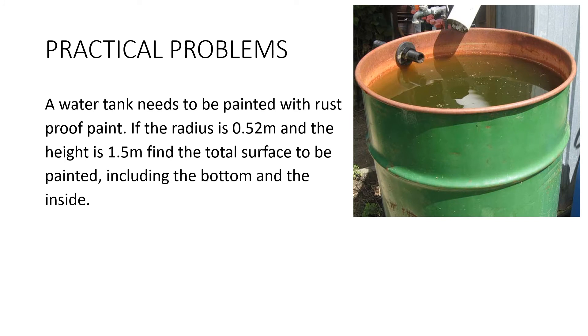Here's a practical problem. A water tank needs to be painted with rust proof paint. If the radius is 0.52 of a metre and the height is 1.5 metres, find the total surface to be painted, including the bottom and the inside. Now this is an interesting problem. We're going to have to manipulate the formula, but we're going to be painting inside the cylinder as well as outside. So I'm going to draw a quick sketch of the net.